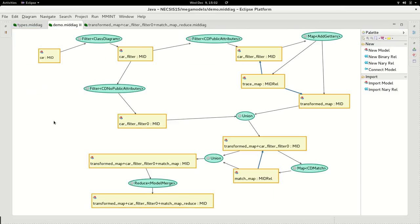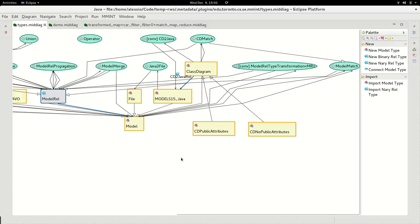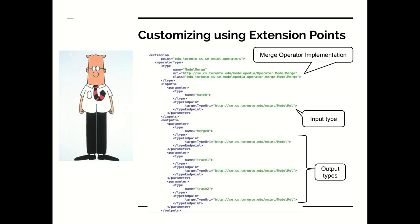To summarize, we ran operators that work on entire mega models — such as filter, map and reduce — to do our model management tasks. Additionally, we customized the type level at runtime, adding new types such as 'cd public attributes' and 'cd2java rel'. Mint can also be customized offline using Eclipse's extension point technology. In this small example, we show the extension point for the merge operator implementation: the class that implements the merge operator is given at the top, and the input and output types of the operator are given at the bottom.